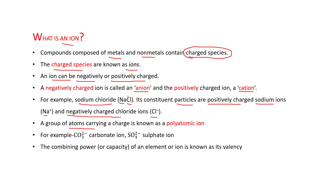A group of atoms carrying a charge is known as a polyatomic ion. For example, CO3 2- — in this case, one carbon and three oxygen atoms combine as a group, and this whole group contains two negative charges. That is why this is a polyatomic ion, and its name is carbonate ion. Similarly, SO4 2- is the sulfate ion. SO4 means one atom of sulfur and four atoms of oxygen; these five atoms together have a charge of 2-.